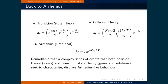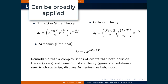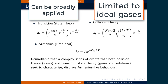Here are the ways that the rate constant is quantified according to both transition state theory and collision theory, with the Arrhenius relationship also provided. It is remarkable that the complex series of events that both theories try to quantify both display Arrhenius-like behavior. Based on the assumptions used to formulate both theories, transition state theory can be more broadly applied since it uses general thermodynamic principles, whereas collision theory explicitly uses the kinetic theory of gases to quantify the rate constant and so reliably can only be applied to ideal gases.